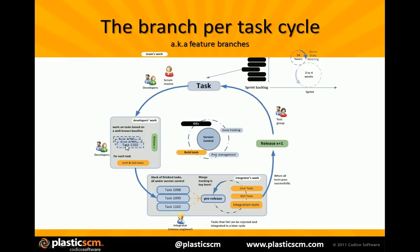In Plastic SCM, what we actually recommend is that for every task you have in your issue tracking system, you'll be creating a new branch. This makes a big difference when you compare it to other systems and other working patterns. You might be thinking this will mean a really big number of branches — and that's true. To implement Branch Per Task, you need a version control system with strong branching and strong merging, which is what Plastic SCM provides. Once a developer starts working on a branch, he will start doing check-ins and can do as many as he wants.